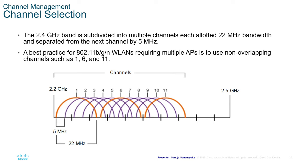Channel Selection. The 2.4 GHz band is subdivided into multiple channels, each allocated 22 MHz bandwidth, separated from the next channel by 5 MHz. The best practice for 802.11bgn WLANs requiring multiple APs is to use non-overlapping channels such as 1, 6, and 11. For this class, you need to know that WLANs should use non-overlapping channels for better performance.